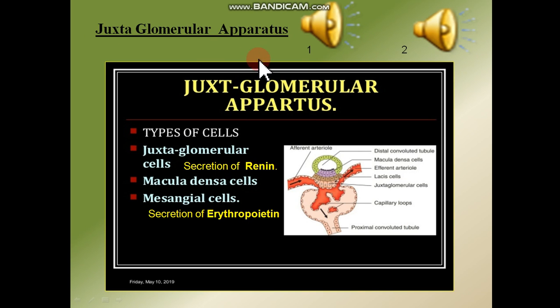Juxtaglomerular cells are involved in the secretion of renin. Macula densa cells are located at the thick end of the tubule.